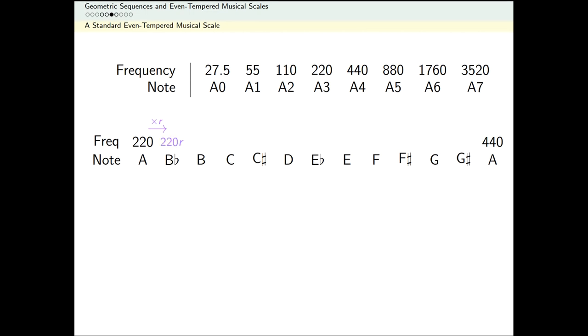Then to get from B-flat to the next note, B, we need to multiply by exactly the same number, R. So the frequency associated with B is going to be 220R times R, or 220R squared.